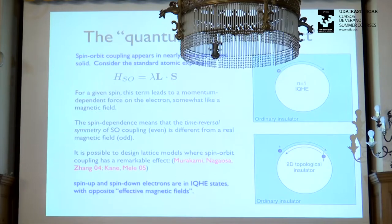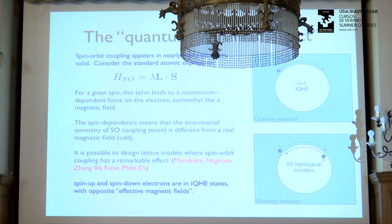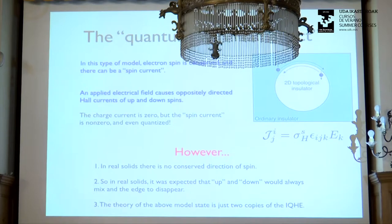You can make lattice models — I'll show you one for historical interest — that realize this 2D topological insulator phase, where a very rough picture would be that up-electrons go right and down-electrons go left. People had that rough picture, but no one really believed it until 2005, because at first glance this looks like a one-dimensional quantum wire, and Anderson told us that one-dimensional quantum wires localize under disorder. The key is that this is half of a quantum wire.